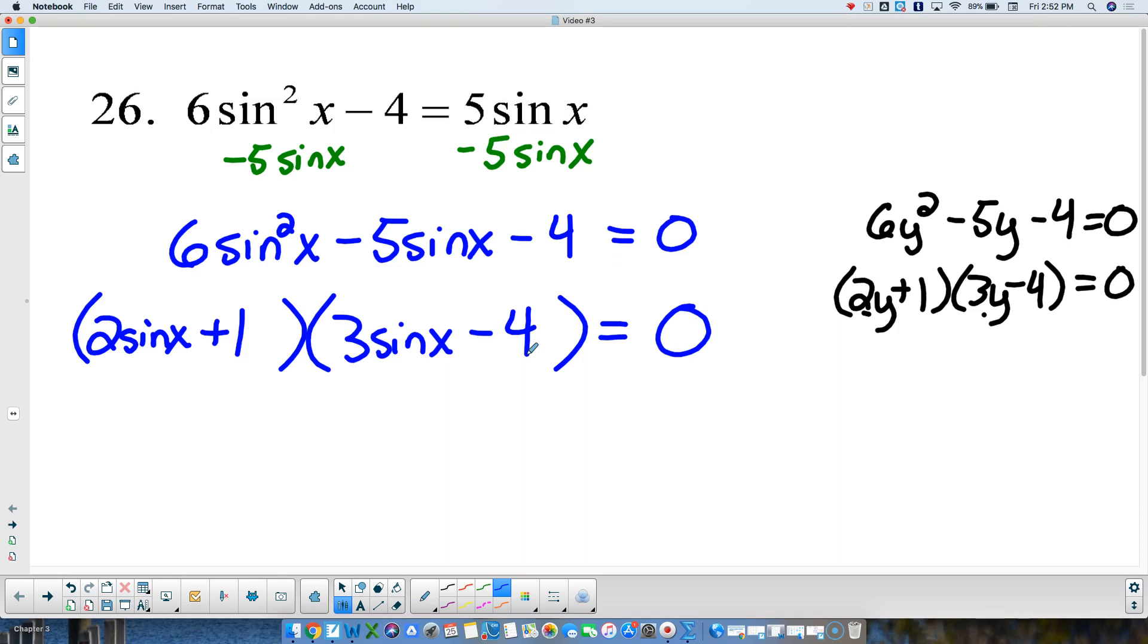Then once those are factored, or once I have those factored in, and I check it to make sure, I do my double distributing to make sure that that's what I got. 2 sine of x times 3 sine of x gives me my 6 sine squared of x. 2 sine of x times negative 4 is negative 8 sine of x. 1 times 3 sine of x is plus 3 sine of x. Altogether, that gives me negative 5 sine of x. And then 1 times negative 4 is negative 4. So it all works out in the end.